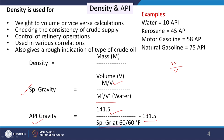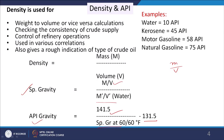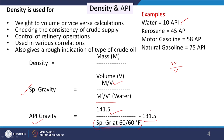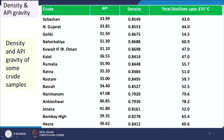API gravity is used to clearly understand the difference between fractions of petroleum crude. For water, the API gravity works out to approximately 10. If a material is lighter than water, its specific gravity is less, so the API value will be more than 10. For kerosene we get 45 API, for motor gasoline 58 API, and for natural gasoline 75 API — so higher API means lighter fractions.